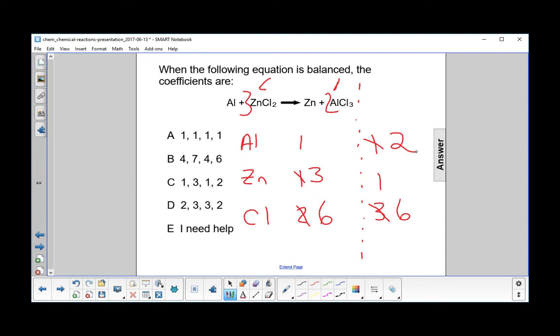So now what do we have to do? Let's see, aluminum, we need another one on the left-hand side. All right, so we'll multiply this by two. Now the aluminums match.